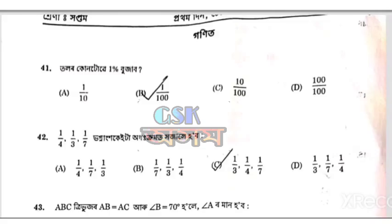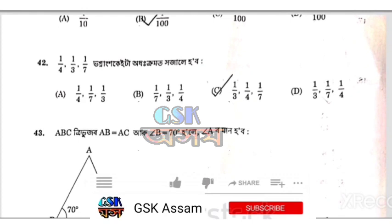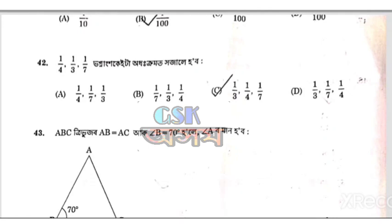Question 41: 1% to 1%, option 1 by 100. Then 42: 1 by 4, 1 by 3 and 1 by 7. This is the same thing.